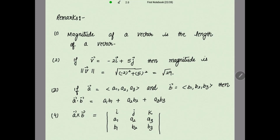Third remark: if vector a has components a1, a2, a3 and vector b has components b1, b2, b3, then their dot product is a1·b1 + a2·b2 + a3·b3. For the cross product, solve the determinant with first column i and components a1, b1; second column j with a2, b2; and third column k with a3, b3. Solving this determinant gives the value of a cross b.